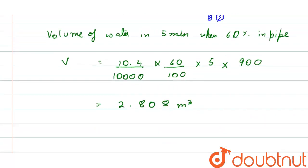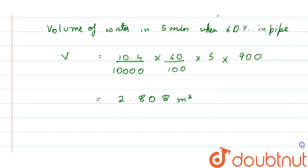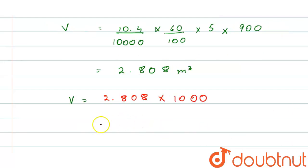So now we have to convert it into liters. For that we can write volume equals to 2.808 into thousand, then we will get 2,808 liters.